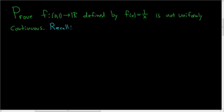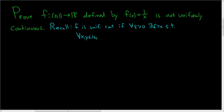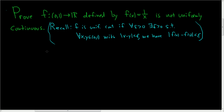Recall, f is uniformly continuous if — let's write down what it means in this case. It means that for all epsilon greater than 0, there exists a positive number delta, such that for all x, y in the open interval (0, 1), with the distance between x and y smaller than delta, we have the distance between f(x) and f(y) smaller than epsilon. So that's what it means for a function to be uniformly continuous — in particular, that's what it means for this function to be uniformly continuous.